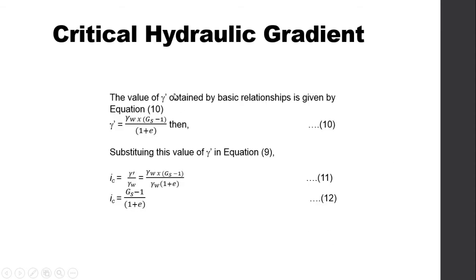The submerged unit weight γ' from basic relationships is given in Equation 10: γ' = γ_w × (Gs − 1) / (1 + e). Substituting this into Equation 9 (i_c = γ' / γ_w), the γ_w cancels, giving i_c = (Gs − 1) / (1 + e). Therefore, we can estimate the critical hydraulic gradient if we know the specific gravity of soil solids Gs and the void ratio e.